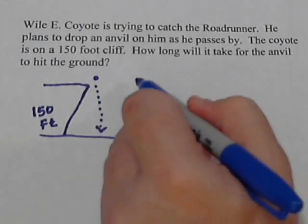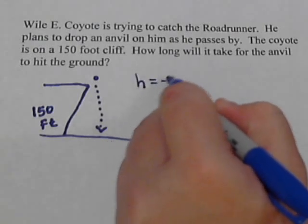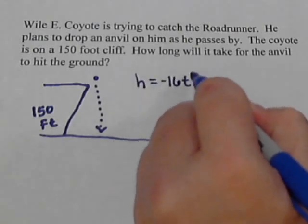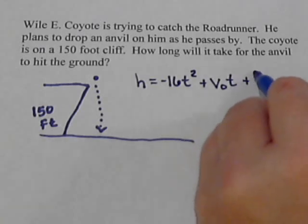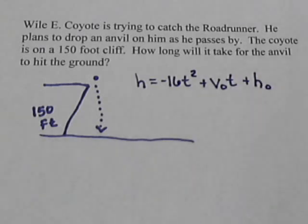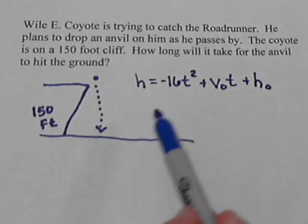Well, the anvil becomes a falling object. So here's our falling object formula. And the first thing we have to ask ourselves is, what variable are we trying to find?